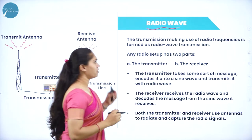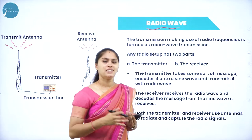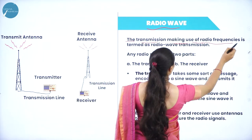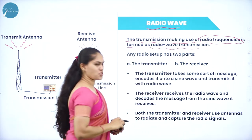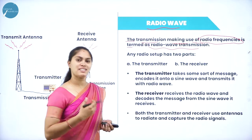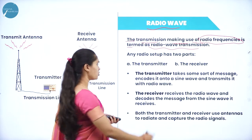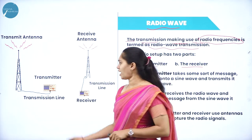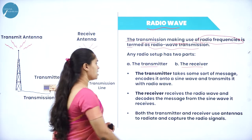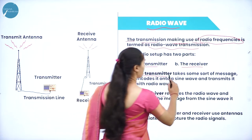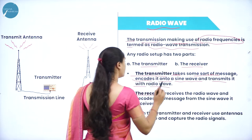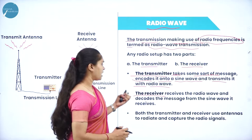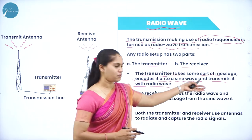The next medium is radio waves. Transmission using radio frequencies is termed radio wave transmission. It has two parts: transmitter and receiver. The transmitter takes a message, encodes it as a sine wave, and transmits it as a radio wave. The receiver receives the radio wave and decodes the message from the sine wave.